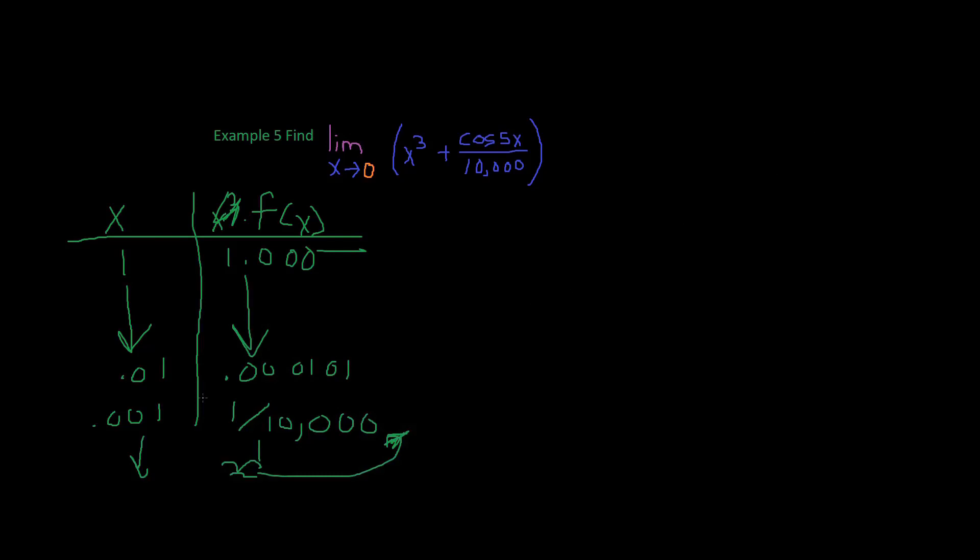Alright, and so what's happening is that no matter what number we put in, we keep putting numbers in, it's going to be approximately 1 divided by 10,000. It's crazy, huh? That it looks like it's approaching 0, but it actually approaches this number.